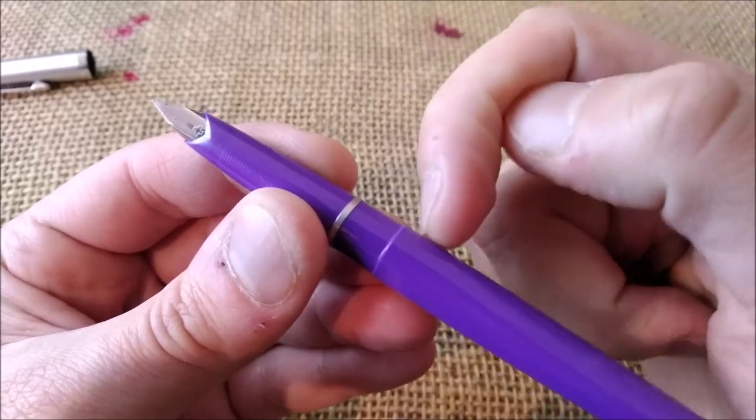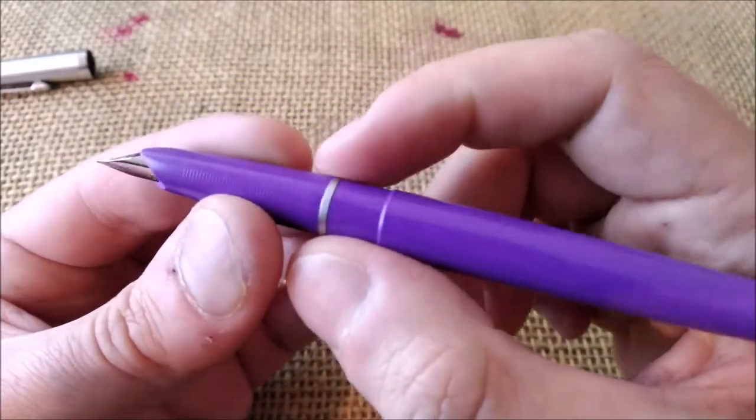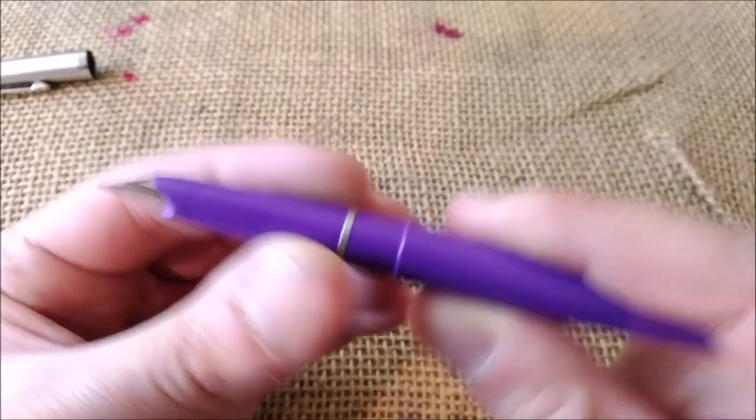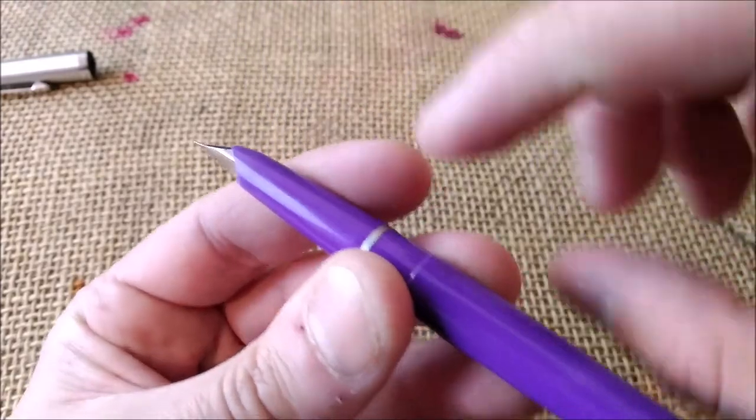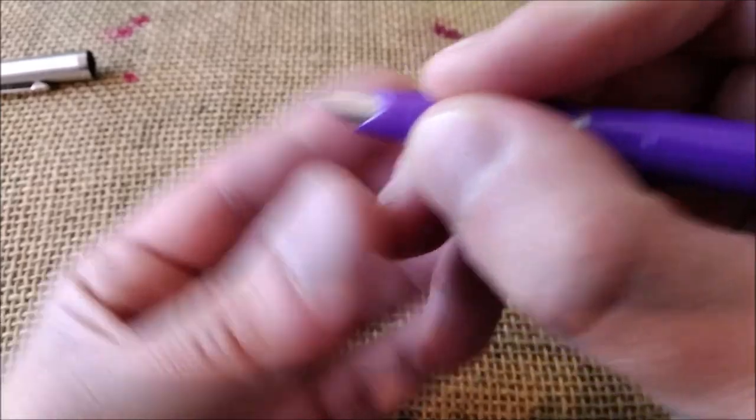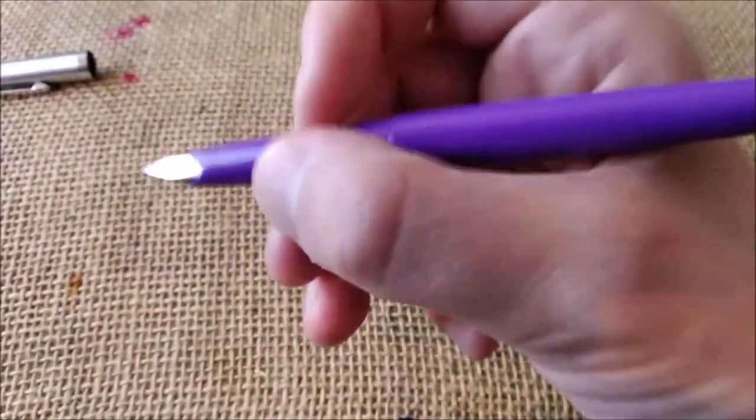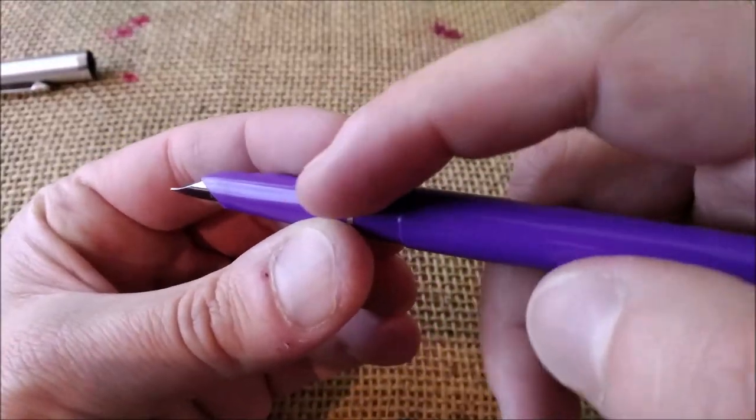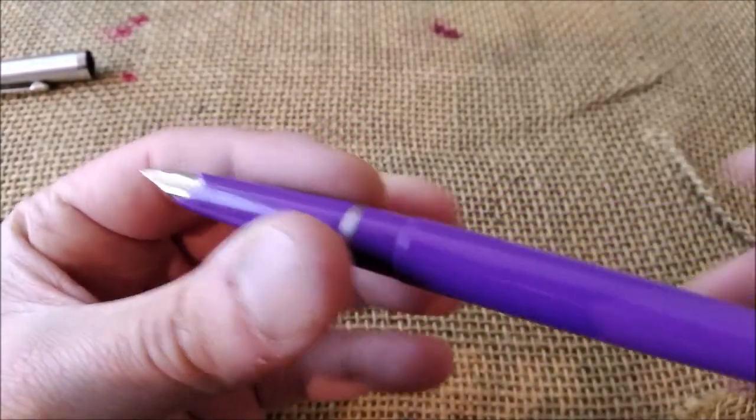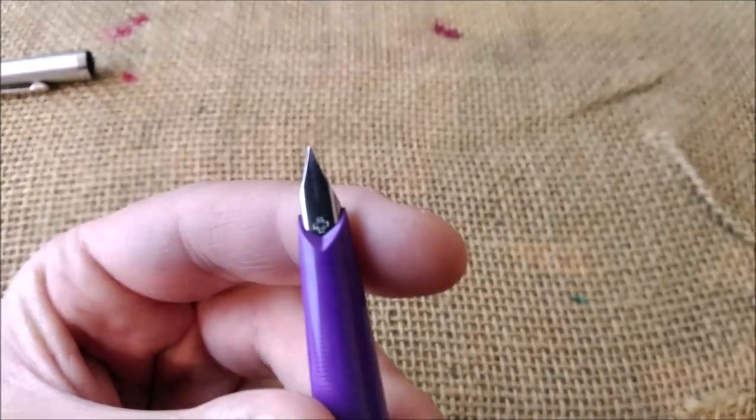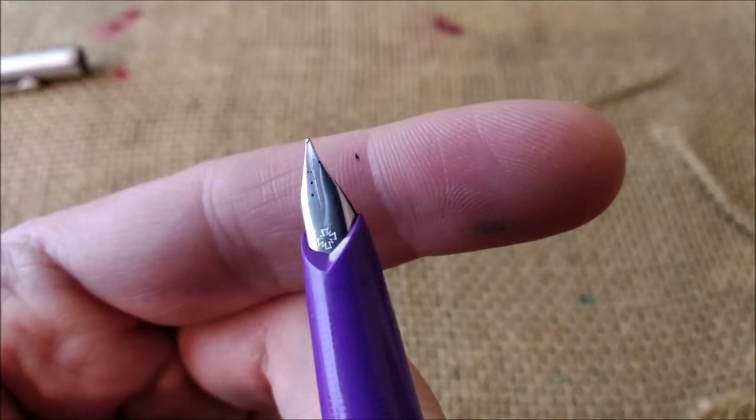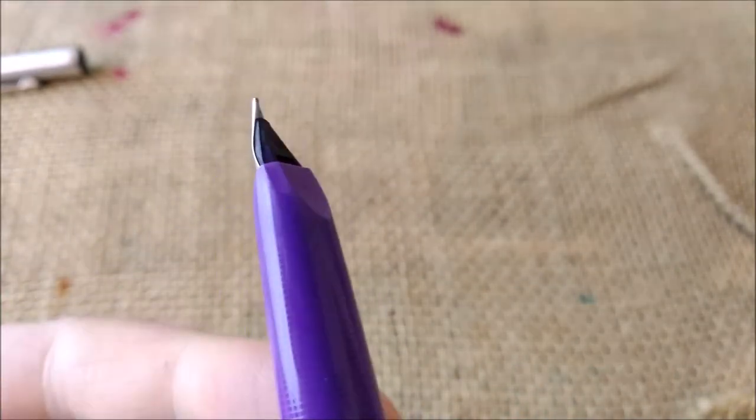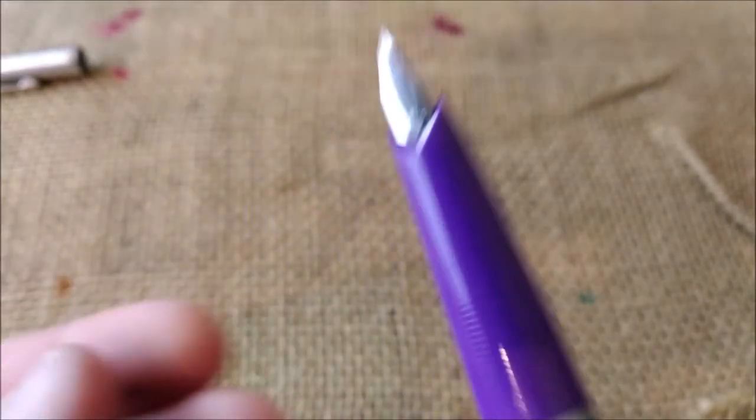The barrel has a little step but you almost won't feel it. It has a metal ring there and then the section. The section has a little bit of texture which helps to make the pen less slippery. Then it has a steel nib which has this nail shape with the Diplomat logo there and with no breather hole. On the other side of the nib you have the F for fine nib.